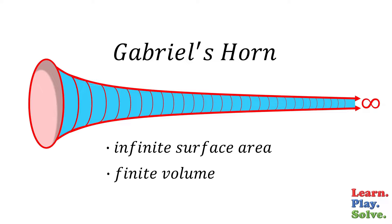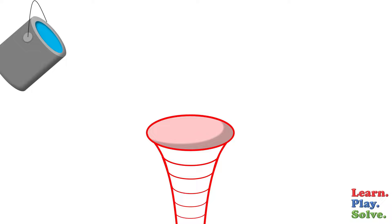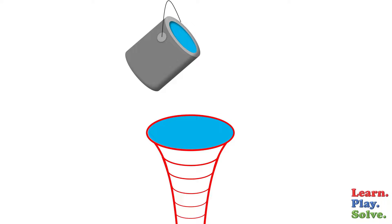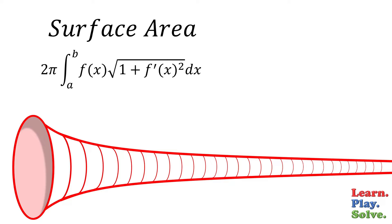However, if you wanted to fill the horn up with paint, you would have no problem. Before we discuss these two apparent contradictions, let's prove them mathematically using the surface area and volume integral formulas for solids of revolution.